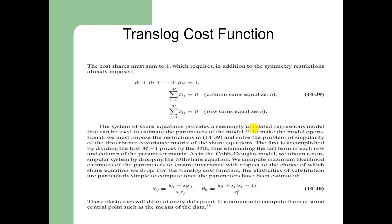As in the Cobb-Douglas model, we obtain a non-singular system by dropping the mth share equation. We compute maximum likelihood estimates of the parameters to ensure invariance with respect to the choice of which share equation we drop. For the translog cost function, the elasticities of substitution are particularly simple to compute once the parameters have been estimated. These elasticities are given in equations 14.40 and will differ at every data point; it is common to compute them at some central point such as the means of the data.